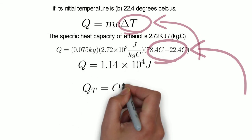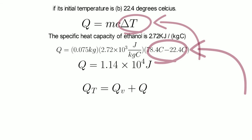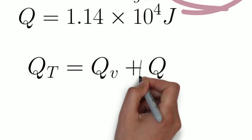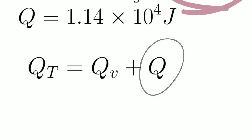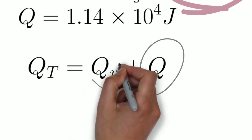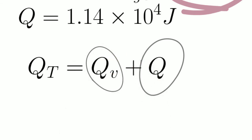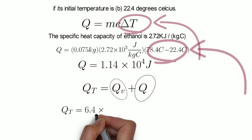Now our total heat would be the heat it took to actually raise the temperature to its boiling point plus the heat it took to actually vaporize it at that boiling point. When we add those two values, we get our total heat, which is 7.5 × 10^4 joules.